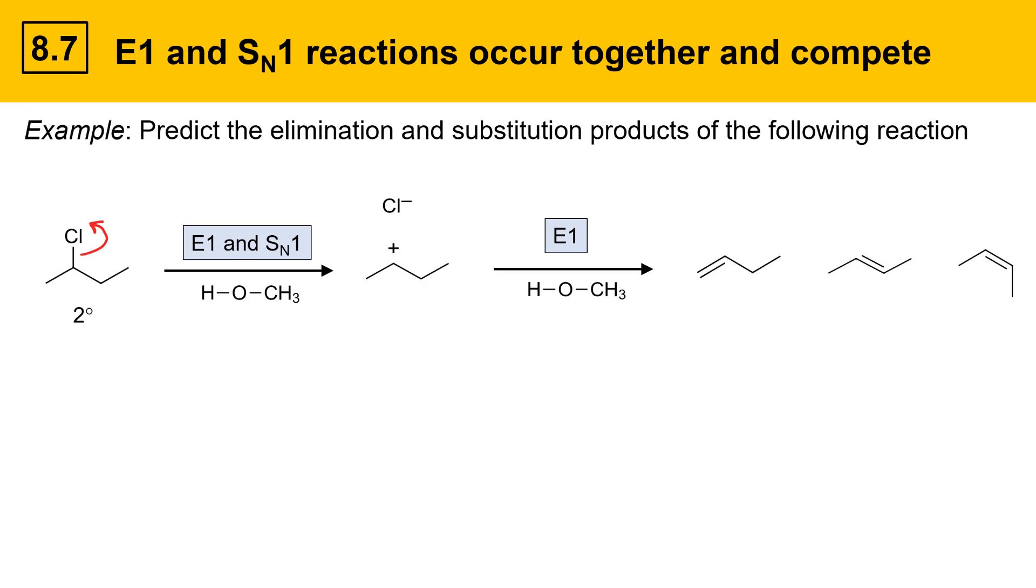Now you might wonder, how does that form from this carbocation? This is a question a lot of students have. Well, remember, you can rotate about single bonds, and that gives this different conformation for the carbocation, and from this species, deprotonation could give the cis alkene. If the methanol were to deprotonate the carbocation in this conformation, that would lead to the stereoisomer, the cis alkene. When a reaction undergoes an E1 mechanism, you have to consider all possible stereoisomers as products, not just the one that comes from the carbocation as it's drawn. The other product of the E1 mechanism is this conjugate acid product and the leaving group.